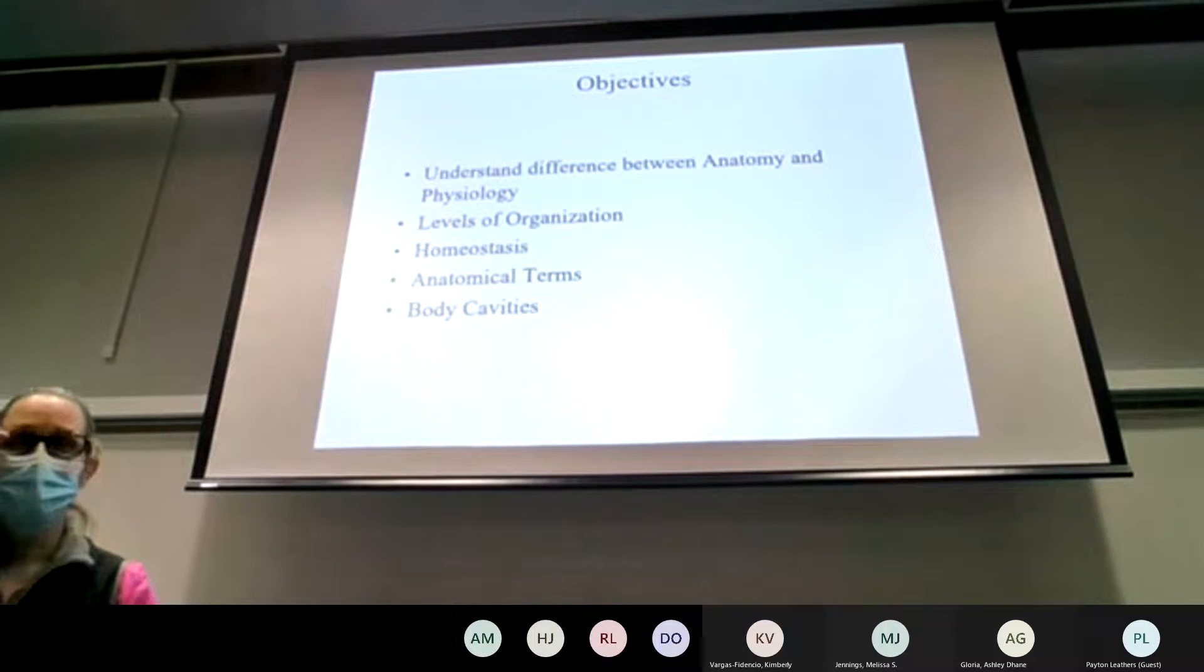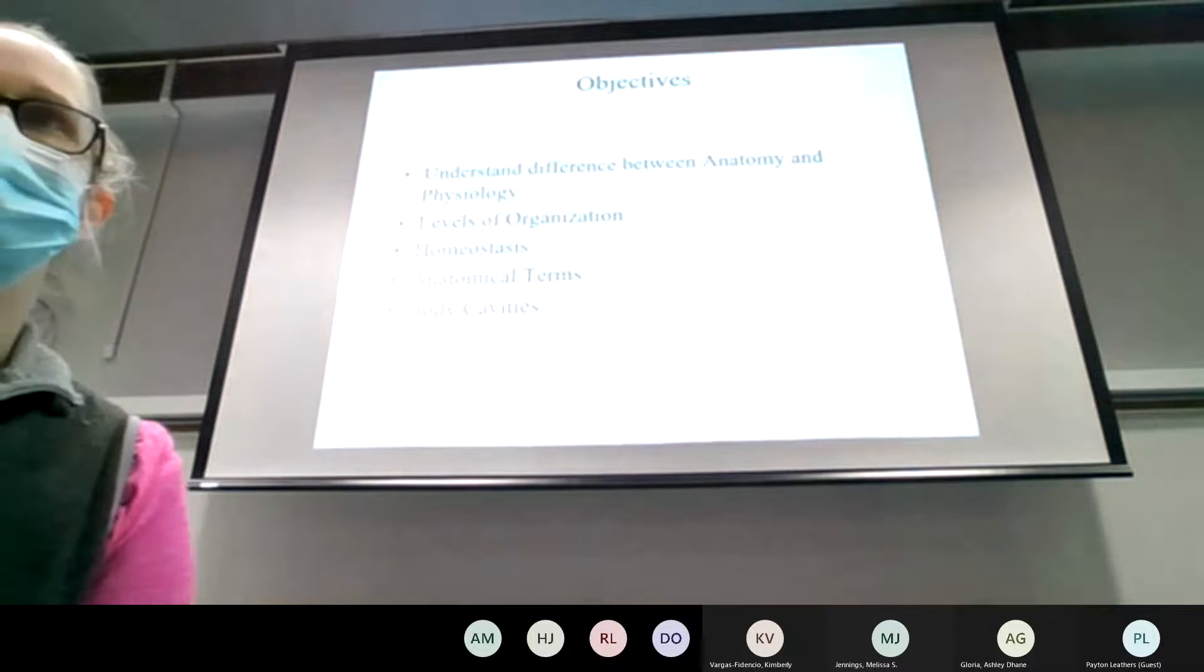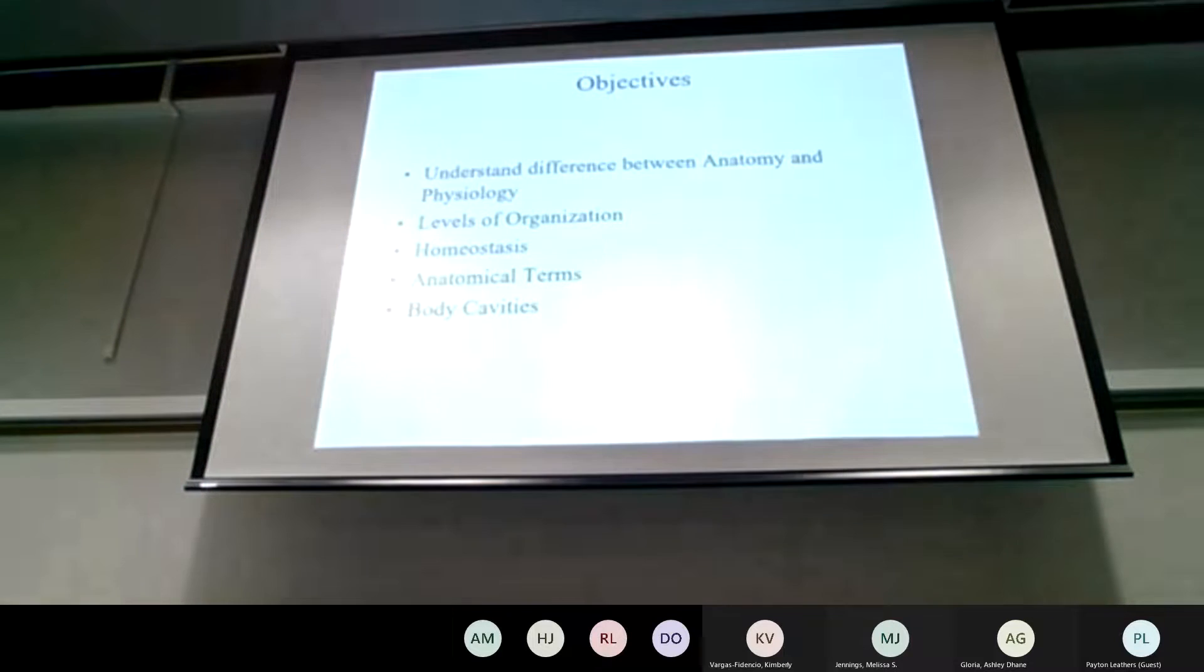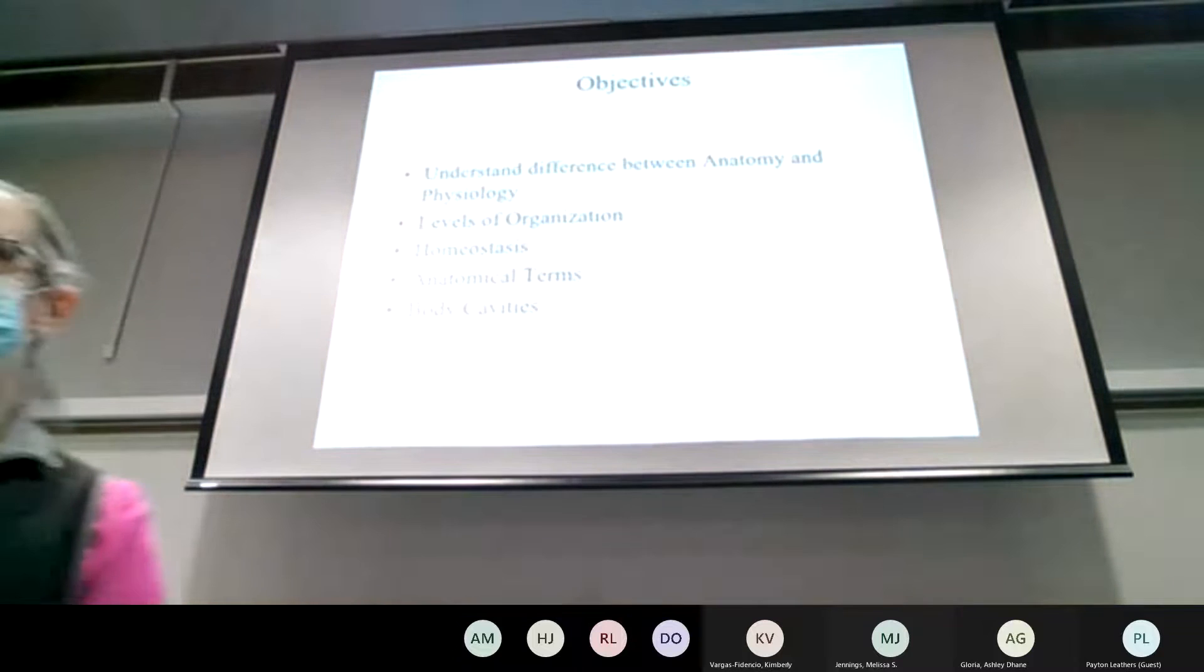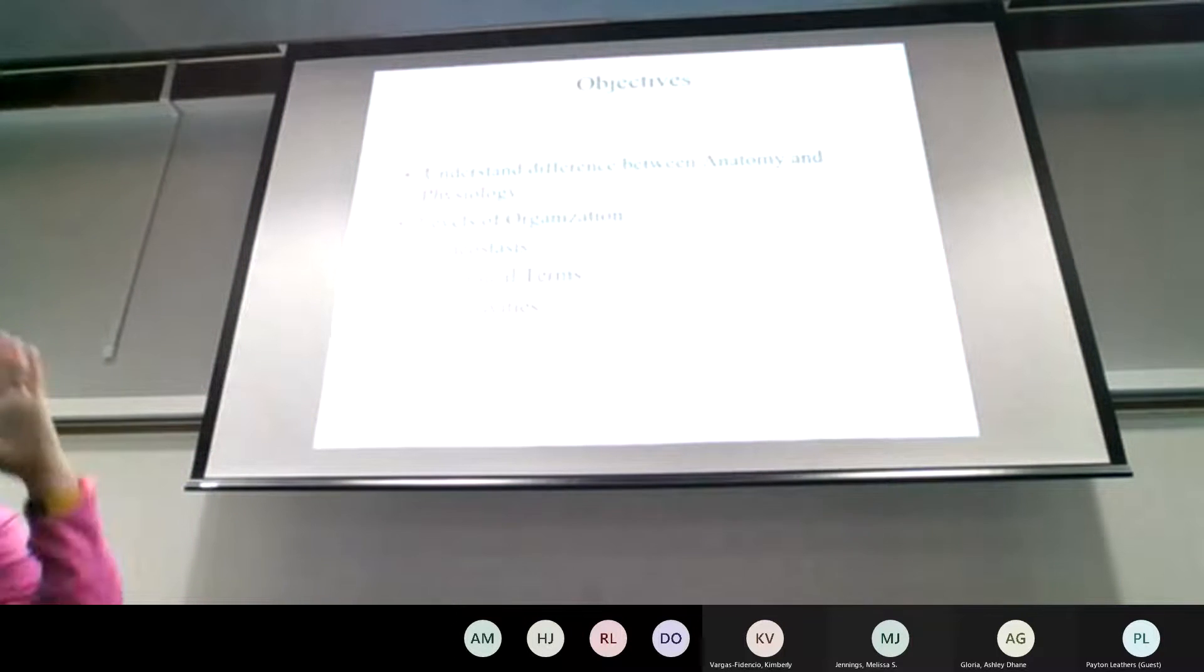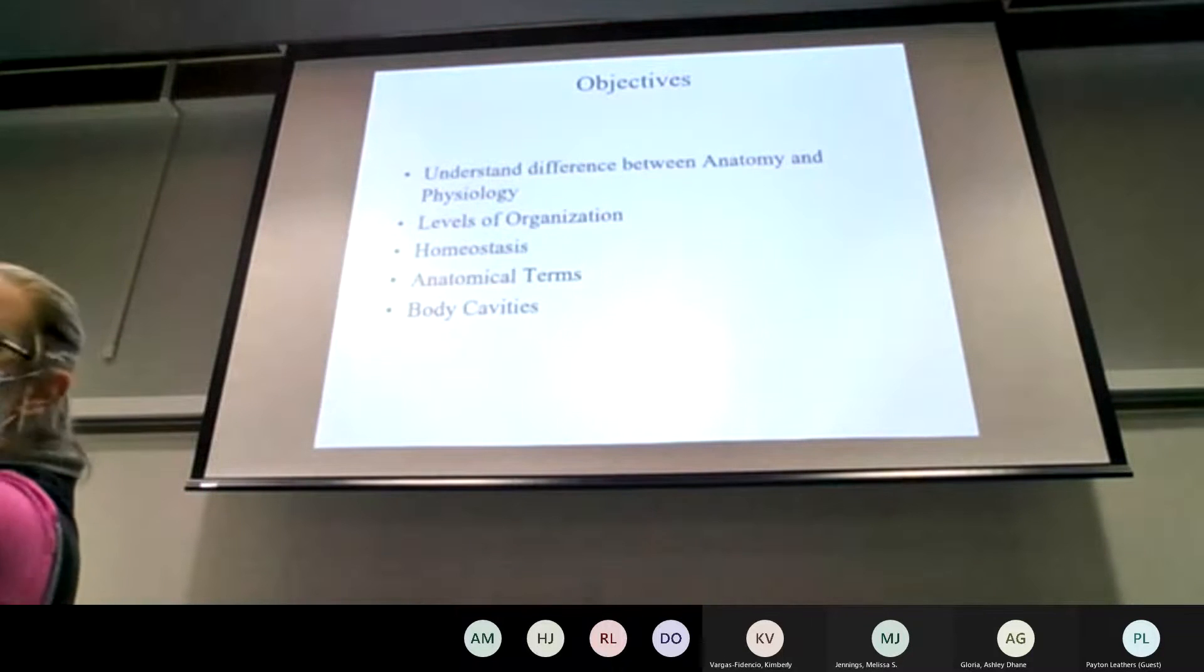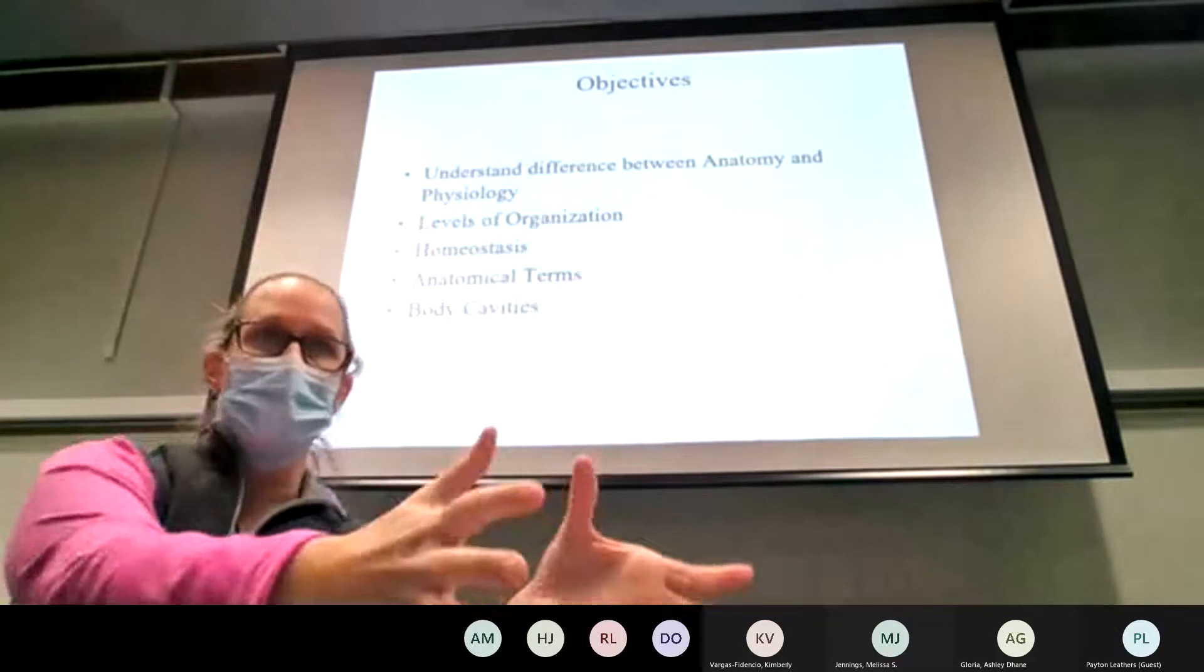So objectives for chapter one. First off, we got to start learning new terminology, universally. We got to start learning the names for the different pieces and parts of the body. How are we going to start cutting and dissecting and slicing and dicing the body? And then we're going to start learning how we start looking at the body from a macroscopic view and then peeling it down towards a microscopic view.